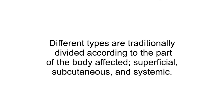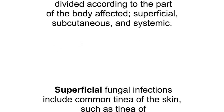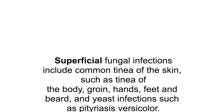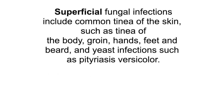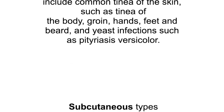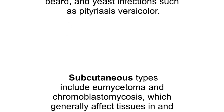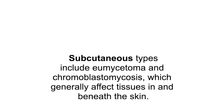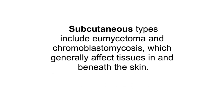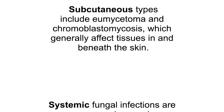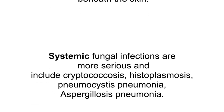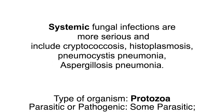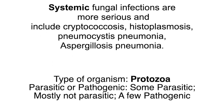Different types of fungal infection are traditionally divided according to the part of the body affected: superficial, subcutaneous and systemic. Superficial fungal infections include common tinea of the skin — such as tinea of the body, groin, hands, feet and beard — and yeast infections such as pityriasis versicolor. Subcutaneous types include eumycetoma and chromoblastomycosis, which generally affect tissues in and beneath the skin. Systemic fungal infections are more serious and include cryptococcosis, histoplasmosis, pneumocystis pneumonia and aspergillosis.